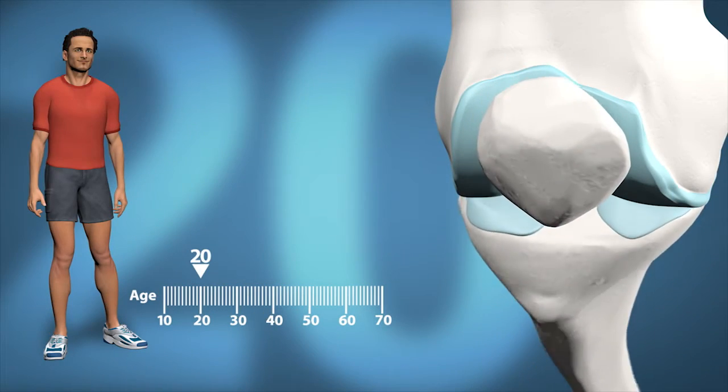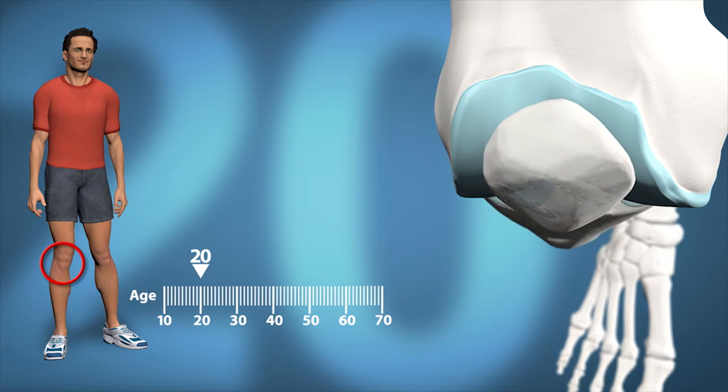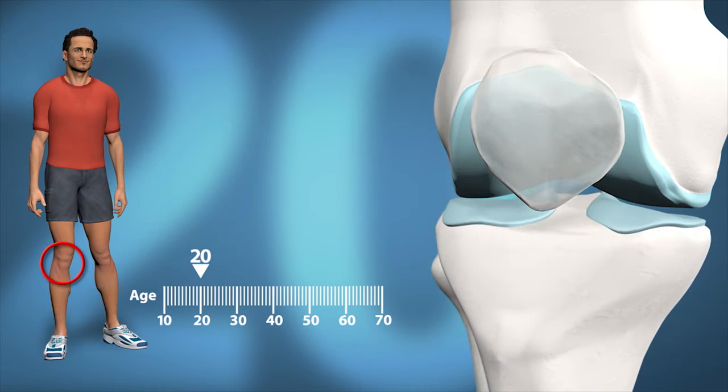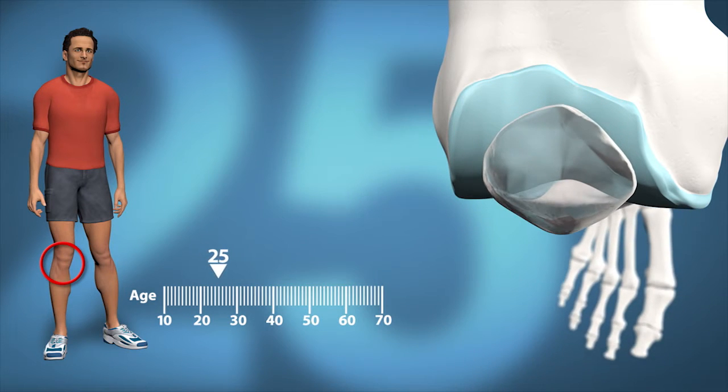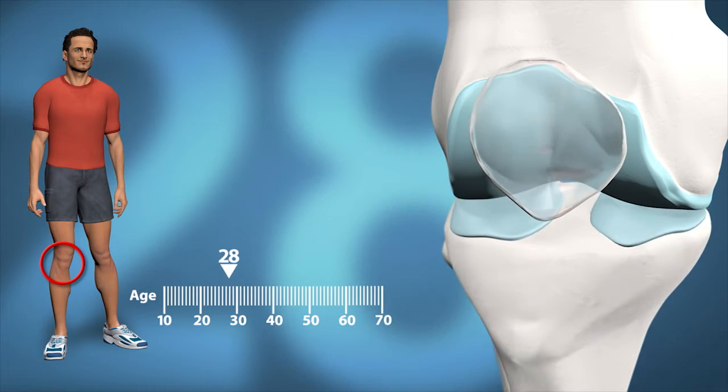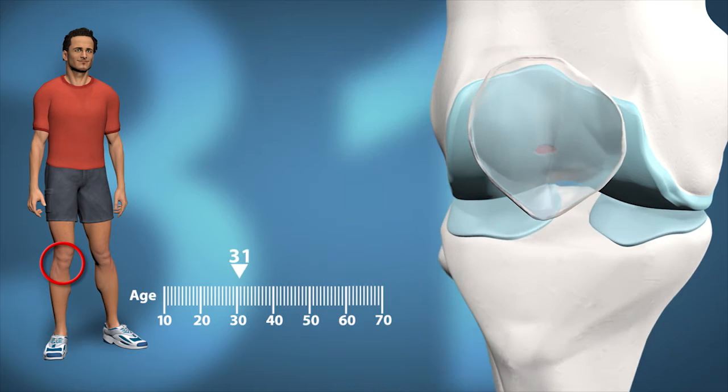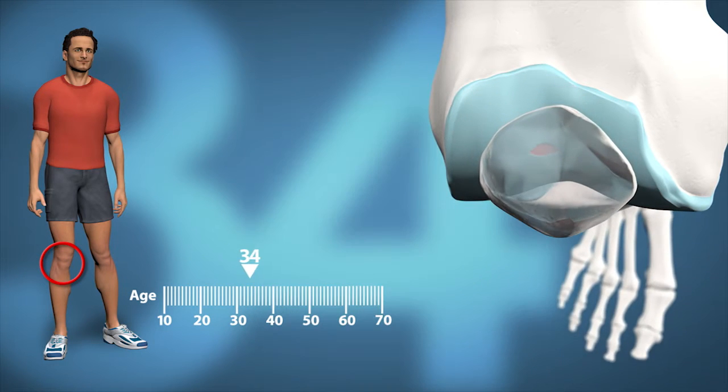Every year there is an increasing number of knee joints with symptomatic chondral damages, which leads to arthrosis. The disease progression is slow but it ends in a situation where the knee function deteriorates so much that taking action becomes necessary.